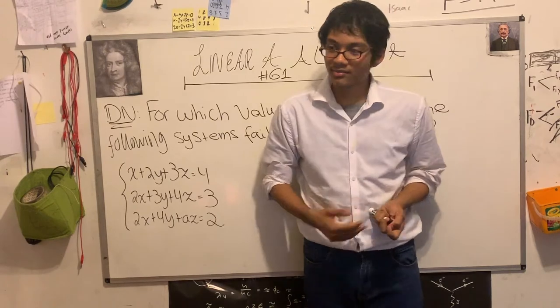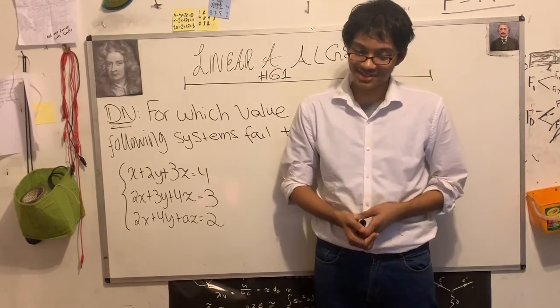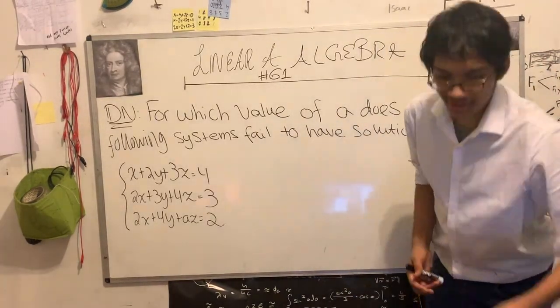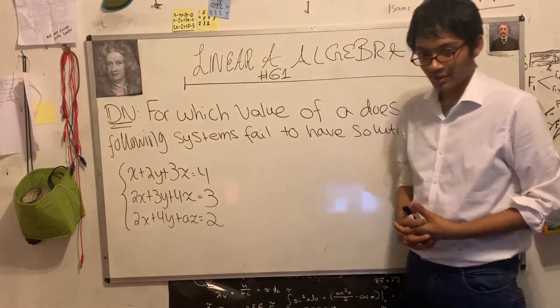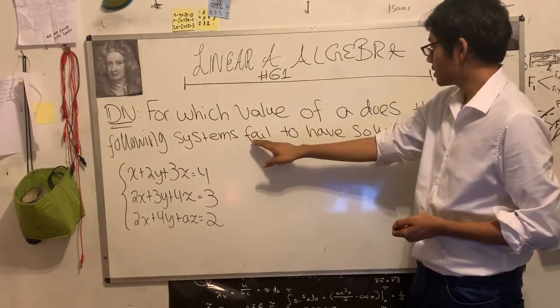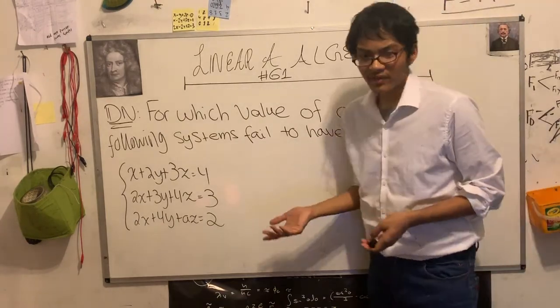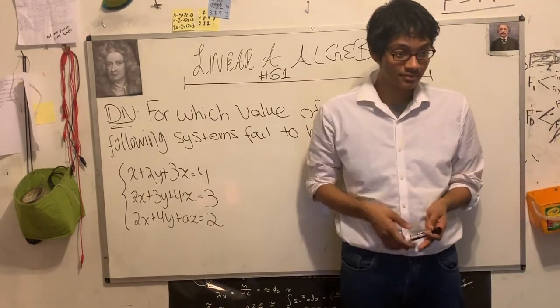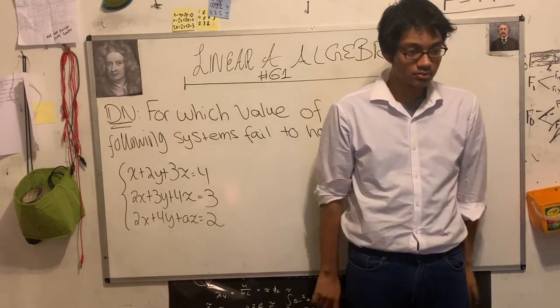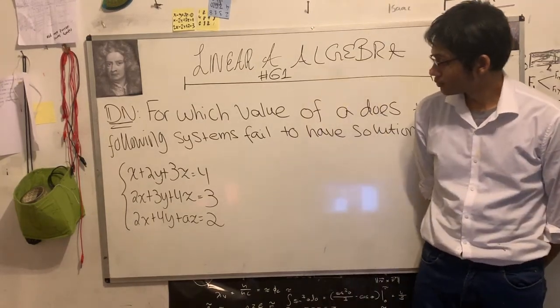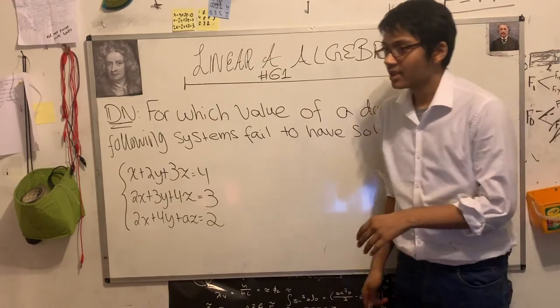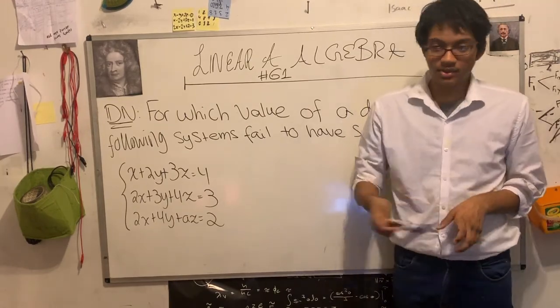I'm going to read the problem again, because one student here is seriously depressed that he cannot solve it. Now, I don't want to see depressed students in my classroom, but I do like to see humble students in my classroom. So which value of A makes the following system fail to have any solutions?